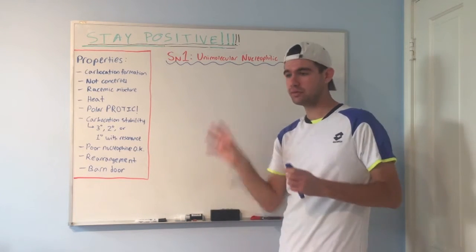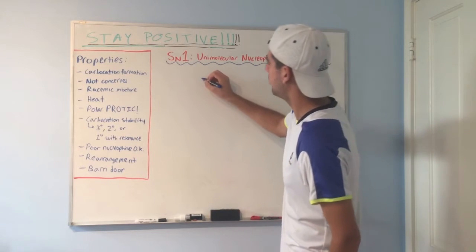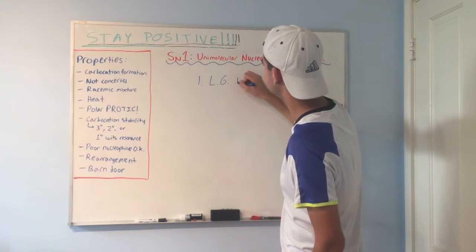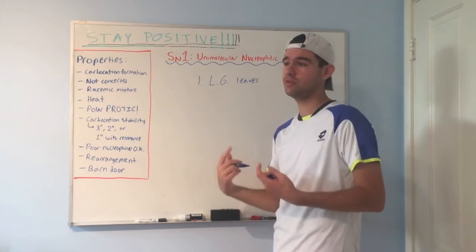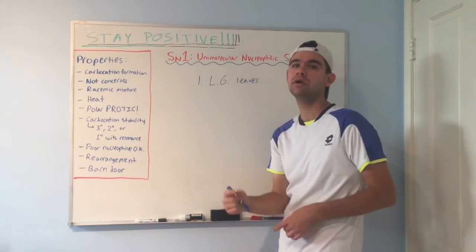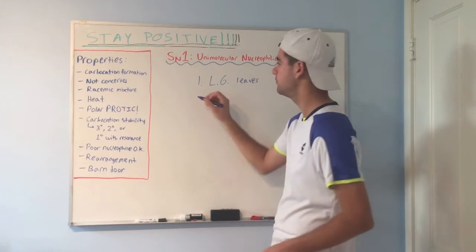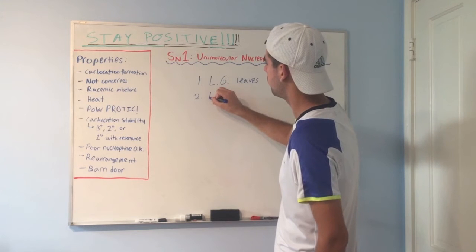Okay, we're going to talk about all of that. But for now, I just want to go over the general scheme of how an SN1 reaction happens. Step one, the leaving group leaves. That'll happen with the help of heat, because normally leaving groups don't just leave on their own. So you're going to have heat. We're going to talk about that later. But with enough heat, the leaving group will leave on its own.